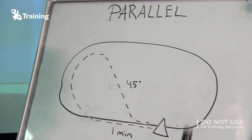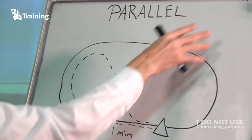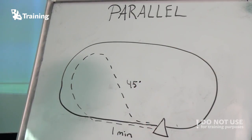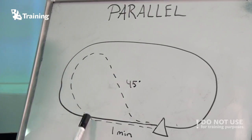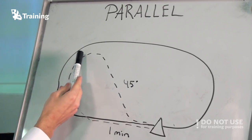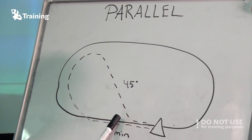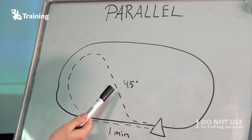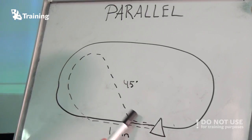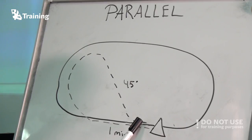Parallel entry: in this case we are coming from somewhere here. We proceed to the fix and then we turn in the opposite direction of the inbound track. We time one minute and then we start to turn with rate one until we can intercept the inbound course — it's good to intercept it at approximately 45 degrees. After that, you establish the wind correction angle on the inbound leg and you start the holding procedure.